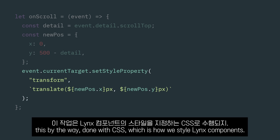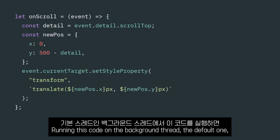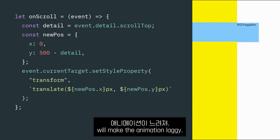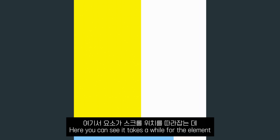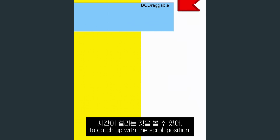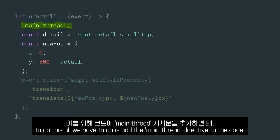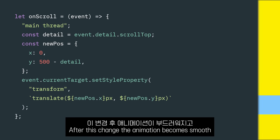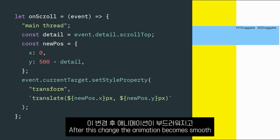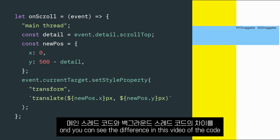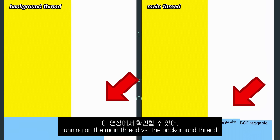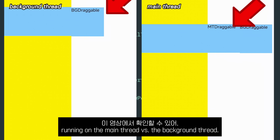This is done with CSS, which is how we style Lynx components. Running this code on the background thread, which is the default, will make the animation laggy — you can see it takes a while for the element to catch up with the scroll position. To make the animation smooth, we can promote the code to the main thread. All we have to do is add the main thread directive to the code. After this change, the animation becomes smooth, and you can see the difference in this video of the code running on the main thread versus the background thread.